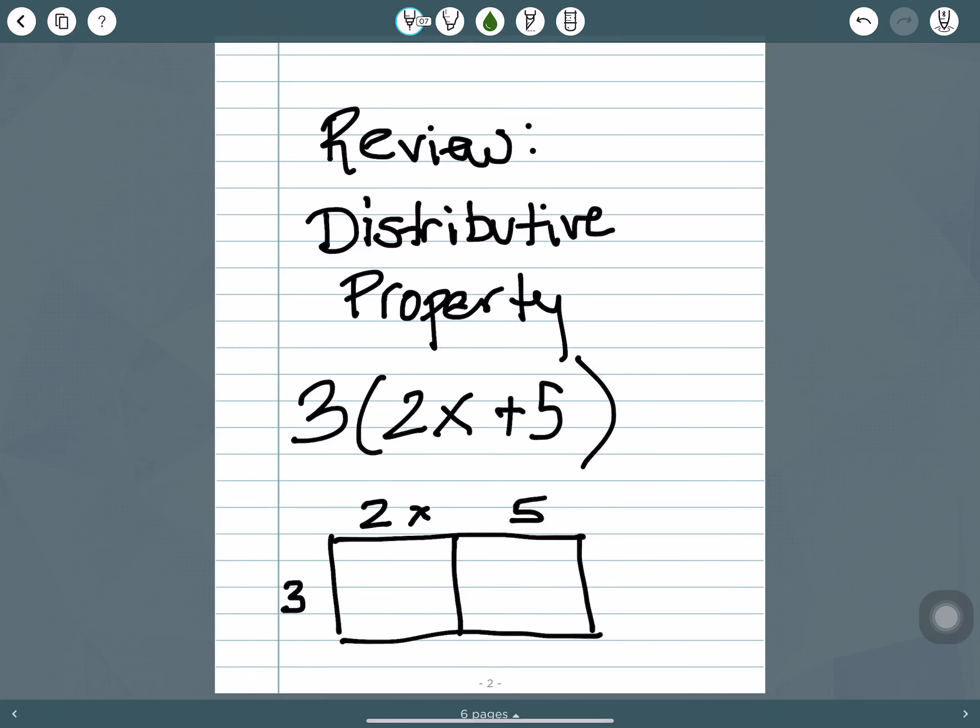So let's do a quick review of the distributive property. Remember, multiplication can be thought of as area. So if we're going to do 3 times 2x plus 5, we could set that up as an area model with the length being 2x plus 5 and the width being 3, and then find the area of each rectangle. 3 times 2x is 6x, and 3 times 5 is 15. So when you distribute, you would get 6x plus 15.